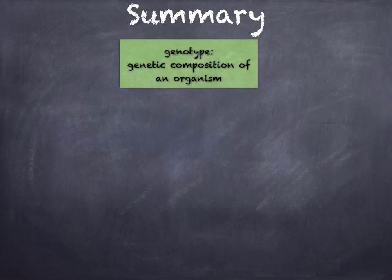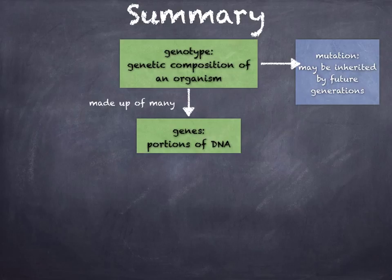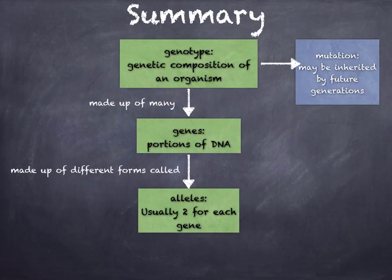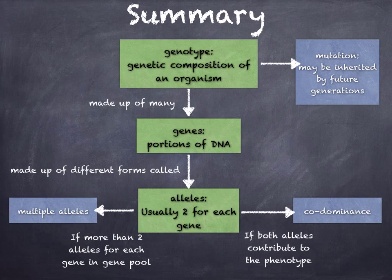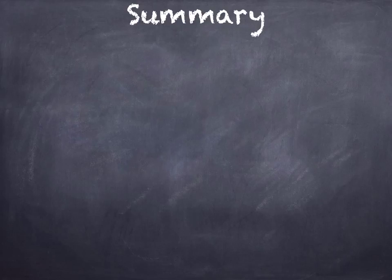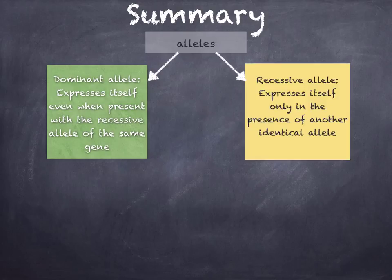In summary: a genotype is the genetic composition of an organism, and a mutation may be inherited by future generations. A genotype is made up of many different genes, which are portions of DNA. These are made up of different forms called alleles — usually two for each gene. If both alleles contribute to the phenotype, we say that it's codominance. And if you've got more than two alleles for each gene in the gene pool, we say that they are multiple alleles. The dominant allele expresses itself when present with the recessive allele of the same gene, while a recessive allele expresses itself only in the presence of another identical allele.